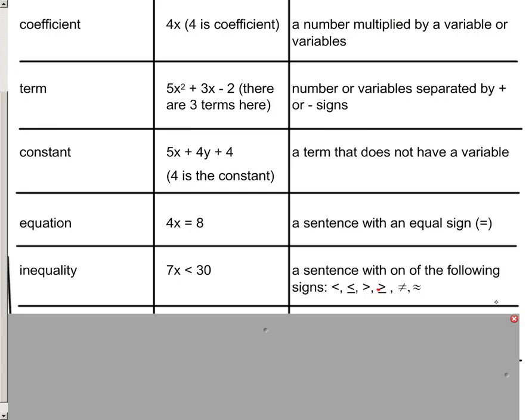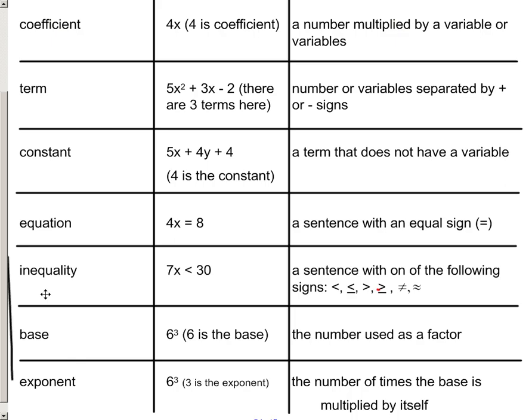And then we've got two more that should be reviewed at this point: base and exponent. For a base, that's like the large number attached to the exponent, so 6 is the base here. But the exponent is the small little number, and that's just a code for saying this one means 6 times 6 times 6. It's the base times itself three times.